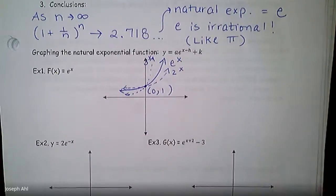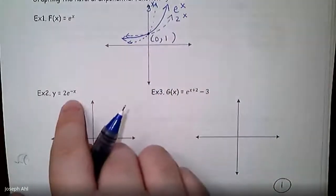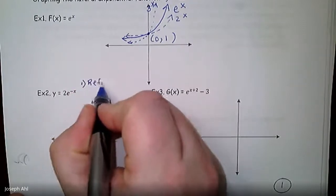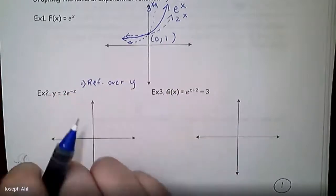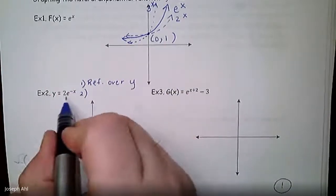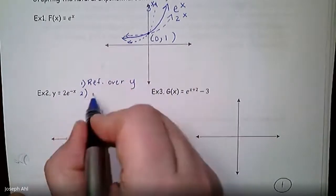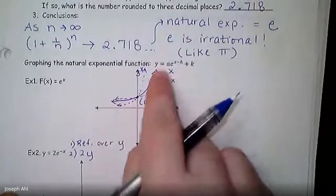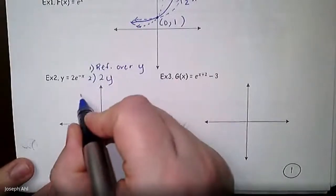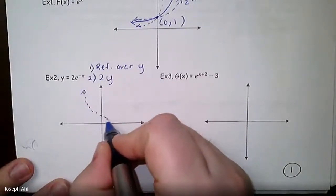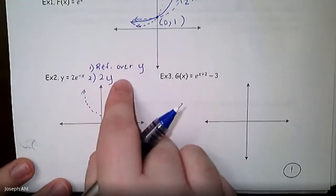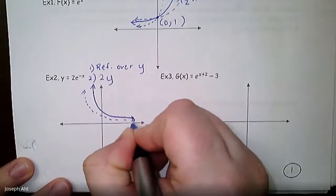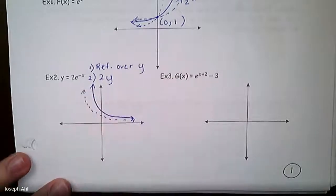So thinking about function transformations that we can apply to the parent e^x, for 2e^(-x), when you negate the x in the exponent, that's going to first and foremost reflect over the y-axis. Negating x flips it over y. And then in step 2, the 2 on the outside is going to be a vertical stretch of the graph. So we're going to double the y values after we flip it over the y-axis.